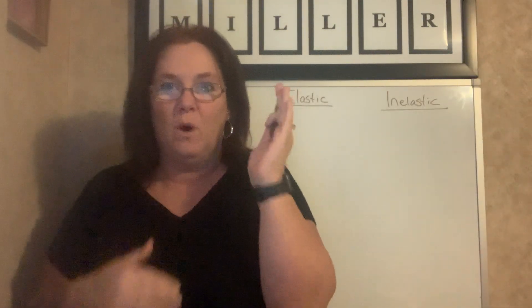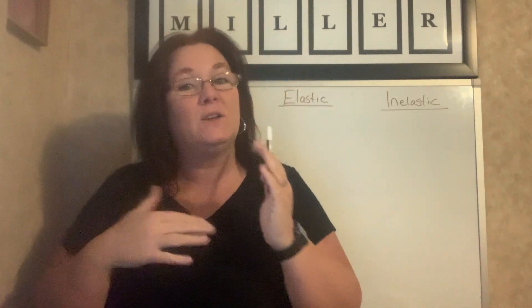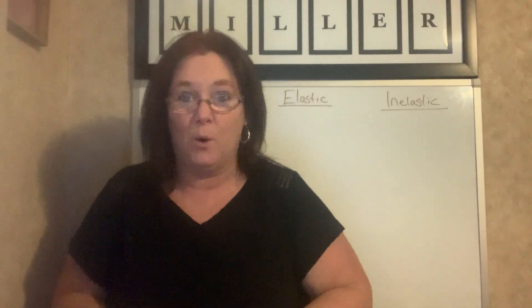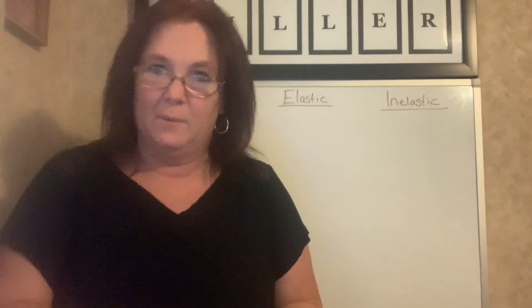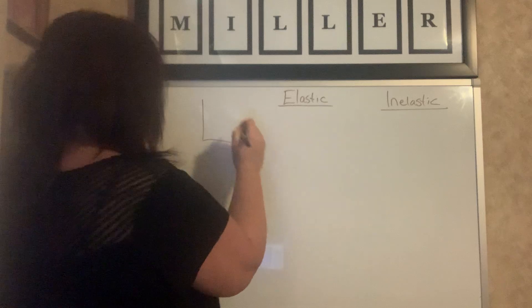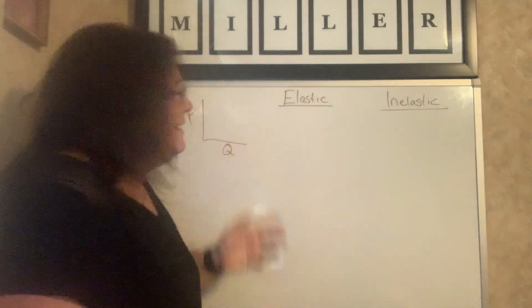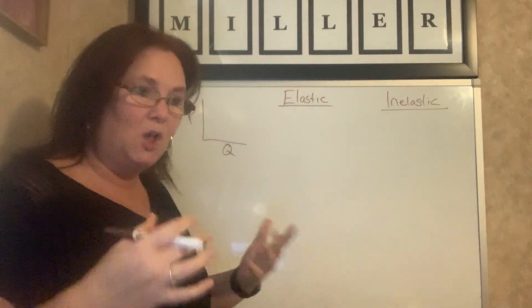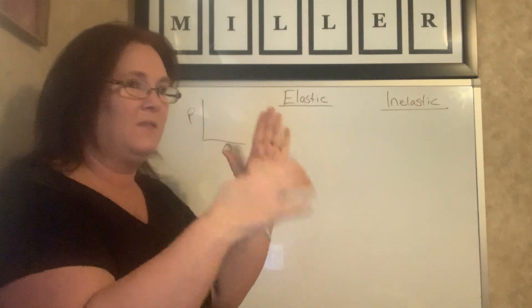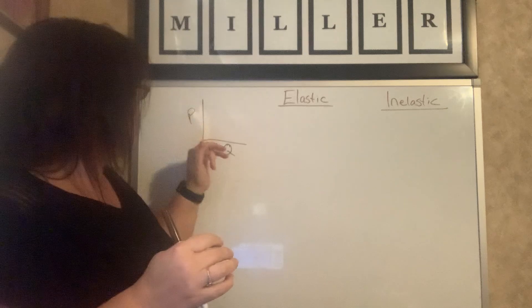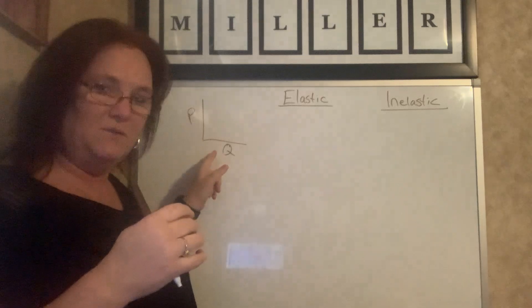Elasticity is the measure of one variable in comparison with the other variable. If you look back to our graphs that you've read over in the chapters we talked about with law of supply and law of demand, what are the two variables? The two variables are price and quantity. This is kind of the same thing as we discussed in law of demand — when my price increases, my demand decreases. That is tracking the reaction of this variable to this variable.